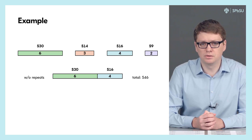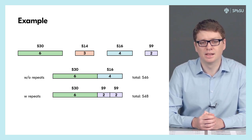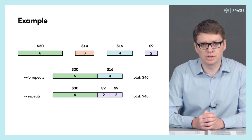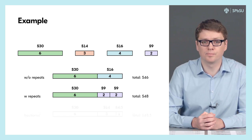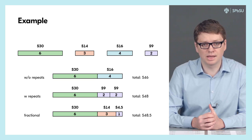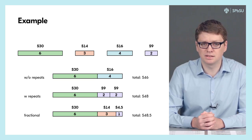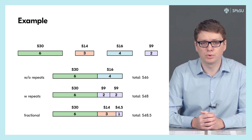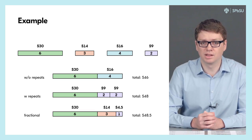On the other hand, if we do allow repetitions, then the optimal value increases to 48. In this case, to achieve this value we can take the first item and two copies of the last item. Finally, if we are allowed to take fractions of items, then the optimal value increases again to 48.5. To achieve this value we can take the first item, the second item, and one half of the last item.